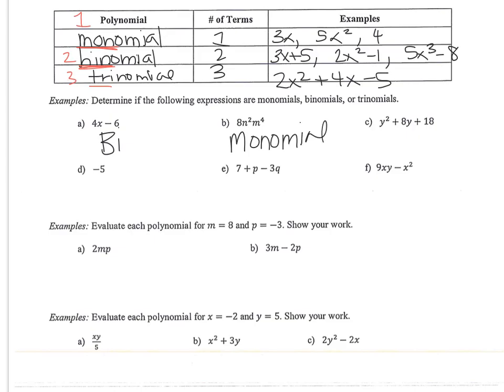This one, there are 3 terms. Because they're separated by 2 plus or minuses. 1st term, 2nd term, 3rd term. So it's a trinomial. In the D, there's 1 term. So 1 term is a monomial. This one has 3 terms. So it's a trinomial. And then this one is a monomial.